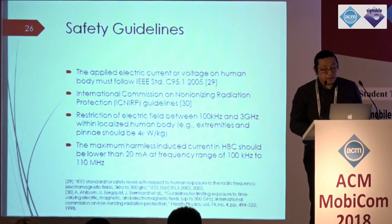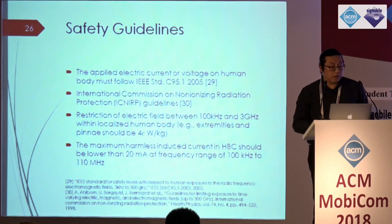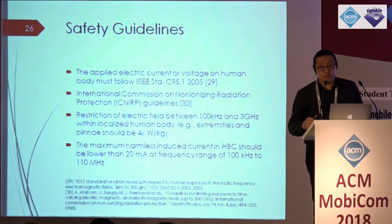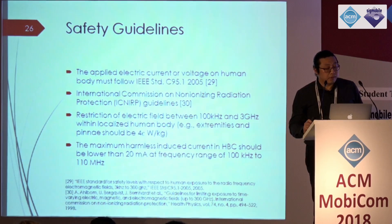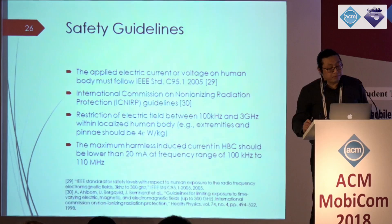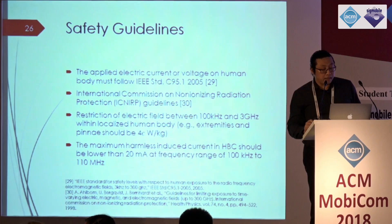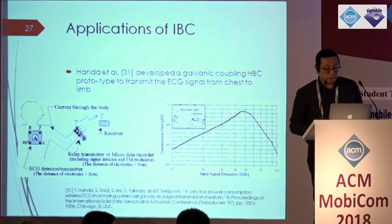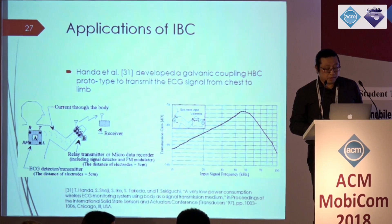Whenever any form of energy is introduced to the human body, we must ensure it is safe. Guidelines and standards have been developed to ensure in-body communication is safe. The applied electrical current or voltage on the human body must follow IEEE standard C95.1 (2005), and the International Commission on Non-Ionizing Radiation Protection guidelines have also been developed to regulate the voltage that should pass through the human body.